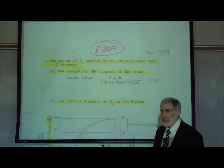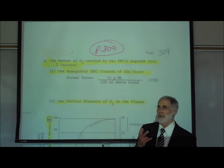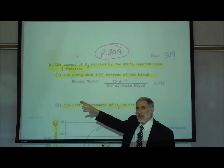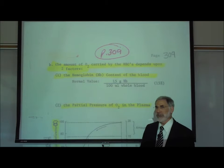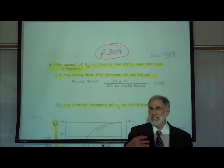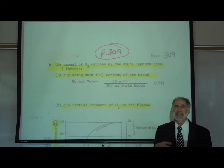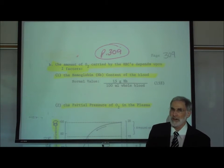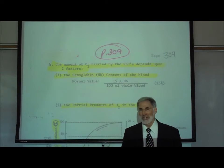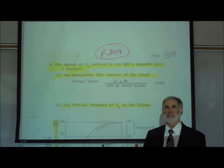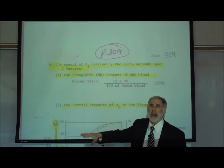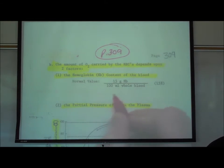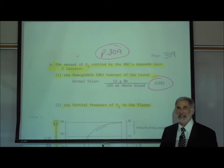On page 309, there are two principal factors that affect the amount of oxygen carried by the red blood cells. Number one, the hemoglobin content inside the red blood cells. There are different types of anemia where the person doesn't make enough normal hemoglobin, so the red blood cell cannot transport the normal amount of oxygen. Normally there are 15 grams of hemoglobin in every 100 milliliters of blood, also written as 15% hemoglobin.